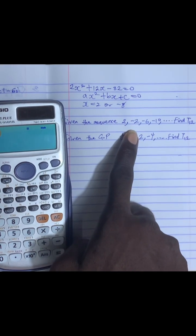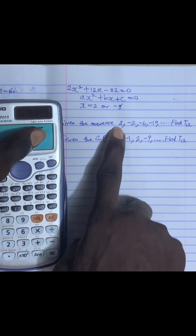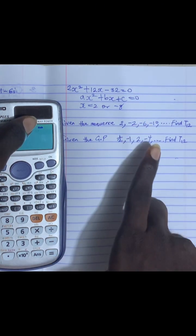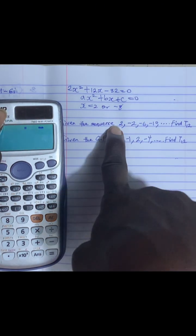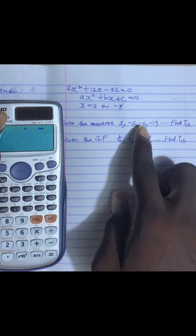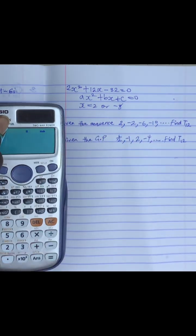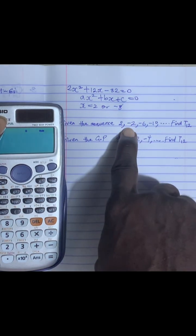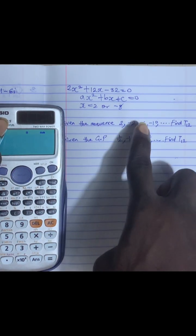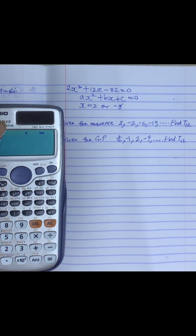The first sequence we have is an AP because the common difference between this term and this term is the same with the common difference between this term and this term. Meaning minus 2 minus 2 will give me minus 4. Minus 6 minus minus 2 will give me minus 4 as well. So second term minus first term should give me the same answer as third term minus second term. Now we know we have an AP question.